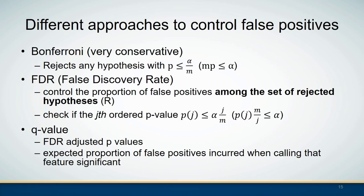There are several methods to control false positives. The Bonferroni method is the most conservative approach — it rejects any hypothesis when the p-value is less than the significance level divided by the number of hypothesis tests. In practice, people usually multiply the p-value by the number of hypothesis tests to make the adjusted p-value larger, making it harder to reject a hypothesis.